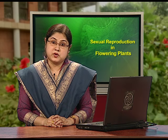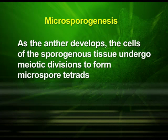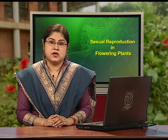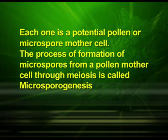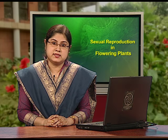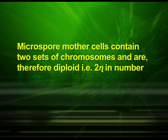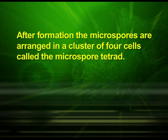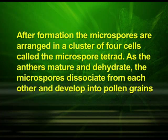Now let us understand the process of microsporogenesis. As the anther develops, the cells of the sporogenous tissue undergo meiotic divisions to form microspore tetrads. Each cell of the sporogenous tissue is capable of giving rise to a microspore tetrad and is a potential pollen or microspore mother cell. The process of formation of microspores from a pollen mother cell through meiosis is called microsporogenesis. The microspore mother cells are diploid (2N). After formation, the microspores are arranged in a cluster of four called the microspore tetrad. As the anther matures and dehydrates, the microspores dissociate from each other and develop into pollen grains.